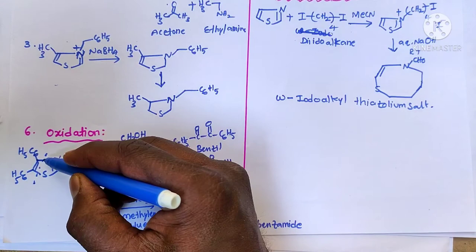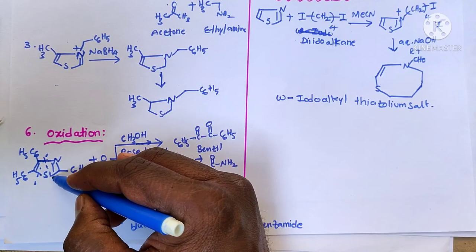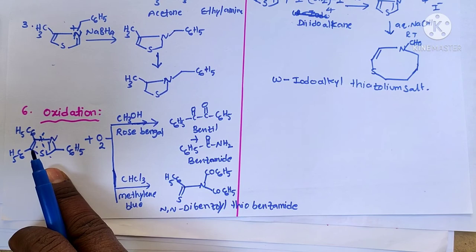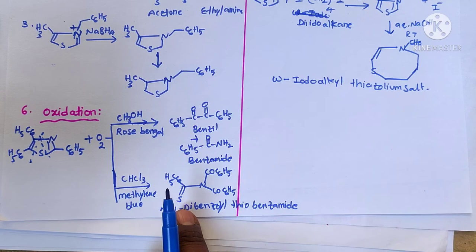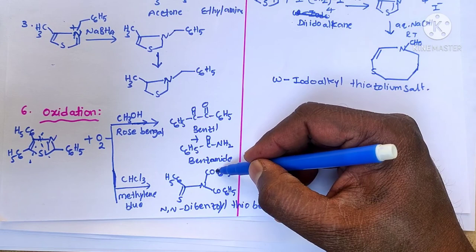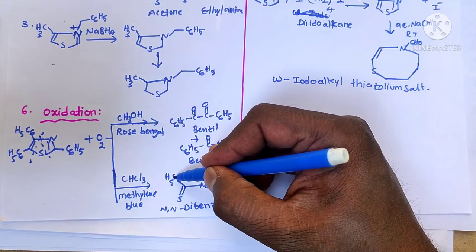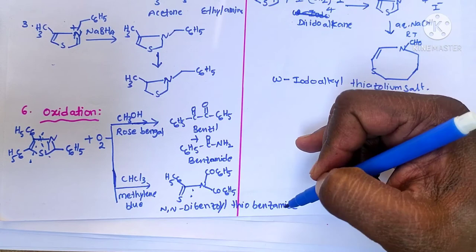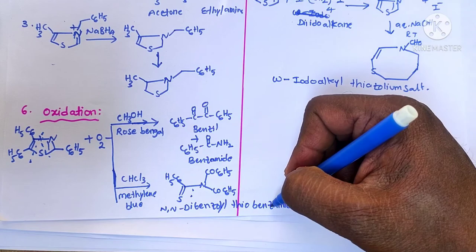When oxidized in chloroform with methylene blue we get N,N-dibenzoyl thiobenzamide — two benzoyl groups are present so we call it N,N-dibenzoyl, and because sulfur is present in place of oxygen we call it thiobenzamide.